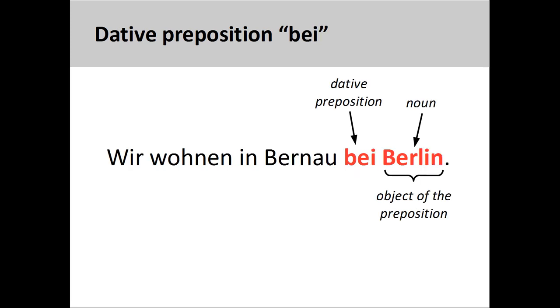The preposition 'Bei' can be used to express being in the vicinity of something or near to it. You will see this frequently in place names, as in 'Wir wohnen in Bernau bei Berlin' — we live in Bernau near Berlin.